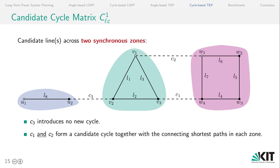If we have connections across two synchronous zones, as shown in this example here, we get a new cycle from C1 and C2 together, which form a candidate cycle together with the connecting shortest path in each of the zones. In this case it would include L3 and L7. For C3 we don't need to worry about a new cycle because already KCL is sufficient to determine the flow in this line.